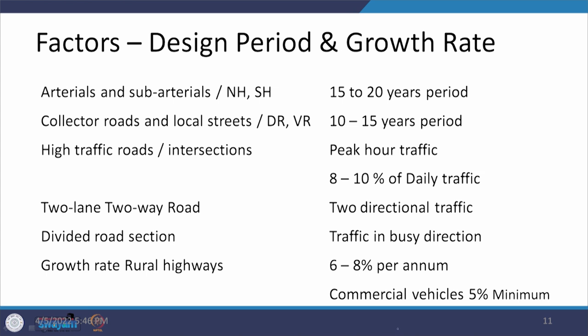The next factor is the design period and growth rate. Design period is required because you project traffic to a particular year and then design the facility for that year's traffic. For urban arterials, sub-arterials, and rural highways like national and state highways, the design period can be 15 to 20 years. For collector roads and local streets in urban areas, and district and village roads in rural areas, it can be 10 to 15 years. The facility size is based on data projected to this period.